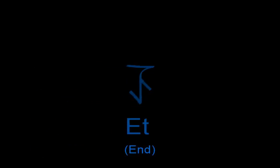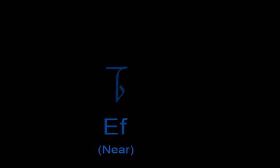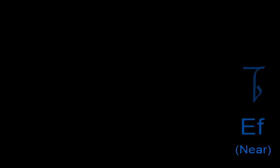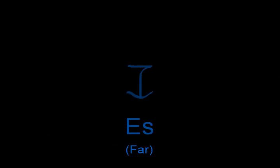Next is the letter Et, which means end and is used in words to describe the farthest most part of something, a finishing edge, and the final moment of an event. After that is the letter Ef, which means near and is used in words to describe being close, a place just beyond the end of something, being before an event, and something that is sooner than another. The last of the frontal letters is Es, which has a meaning of far and is used in words to describe being distant, later, and being after an event.